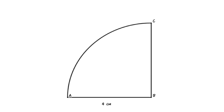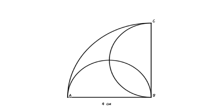ABC is a quarter circle with 4 cm radius. Draw a semicircle inside ABC with diameter AB, and also draw another semicircle with diameter BC. Then find the area of the blue shaded region.